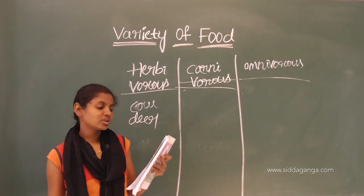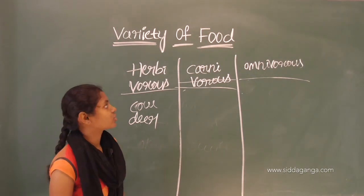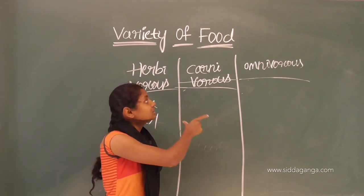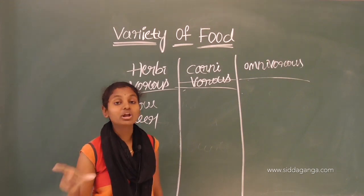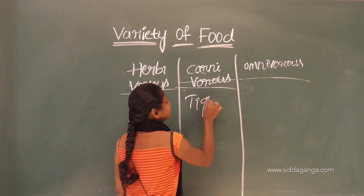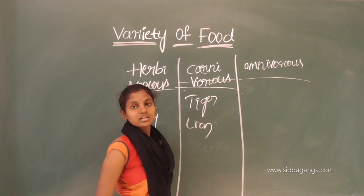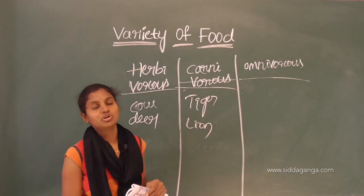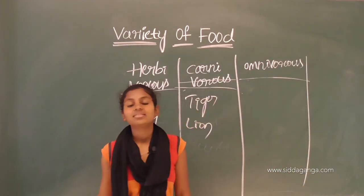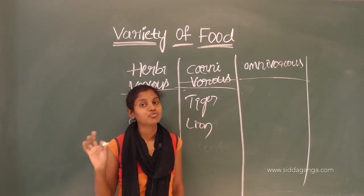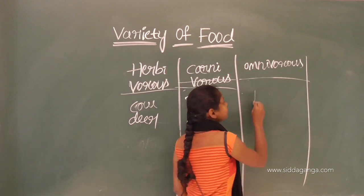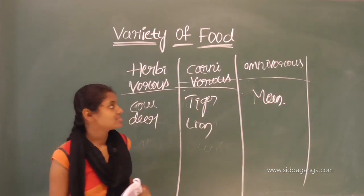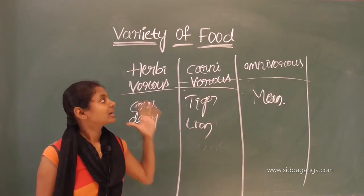Carnivores are animals which eat other animals and their products. They can eat only the flesh or meat of other animals, so their food depends on animal sources. Examples are tiger and lion. Omnivores are animals which eat both plants and animals and their products. An example is man — man can eat both plant sources and animal sources.